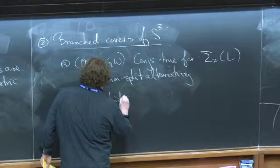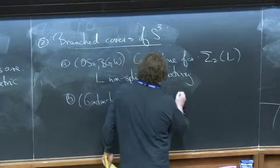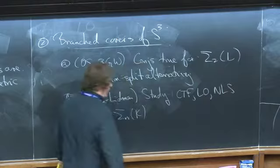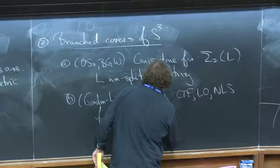And so there are hundreds of thousands of those and trying to determine by machine calculation whether you're CTF, LO or NLS. Now another paper, Gordon and Lidman study CTF, LO and L-space for Σₙ(K), the n-fold cyclic branch cover of K, where K is varying over certain families of knots.